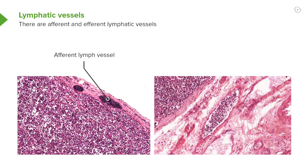These lymphocytes in this afferent or arriving vessel will leave the lymphatic vessel in sinuses in the lymph node. They'll wander about through the lymph node to check out whether or not there are any antigens present, and then they'll leave via efferent lymph vessels to finally join up into the vascular system. So that's why you see in lymph vessels lots and lots of lymphocytes.